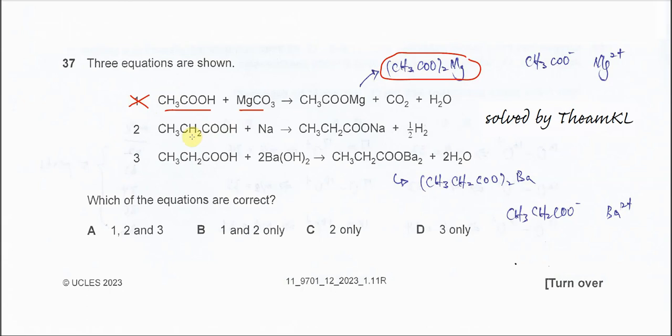For the second one, propanoic acid reacts with sodium, so it forms this salt. This is correct because sodium is positive and this ion, the propanoate ion, is negative. And of course half moles of H2, because after it's balanced, this one is half H2. So this equation is correct.